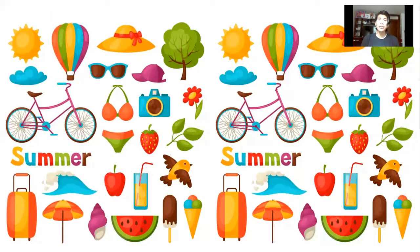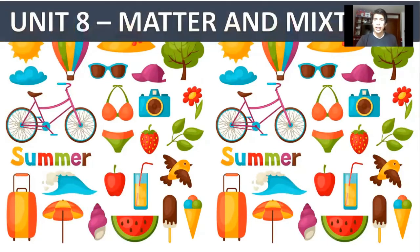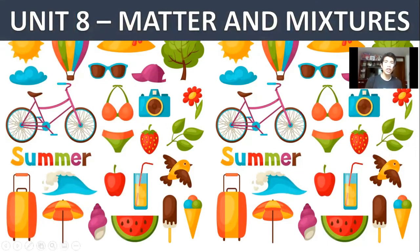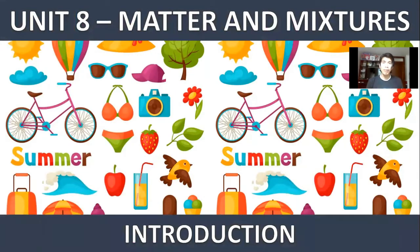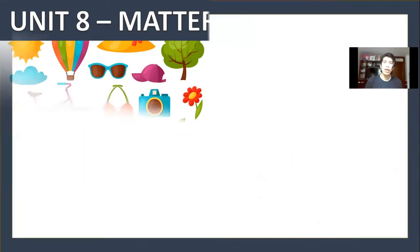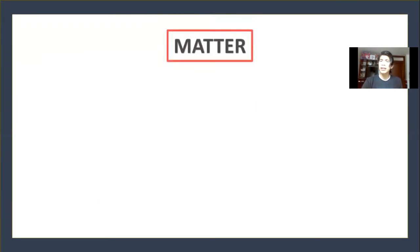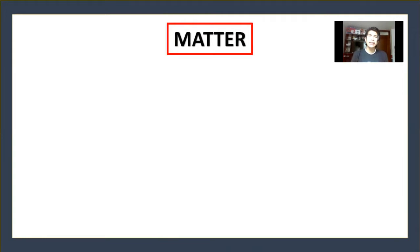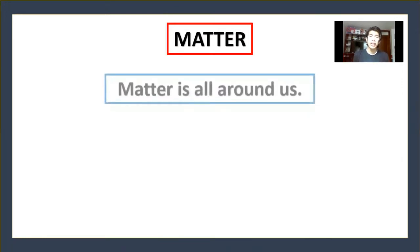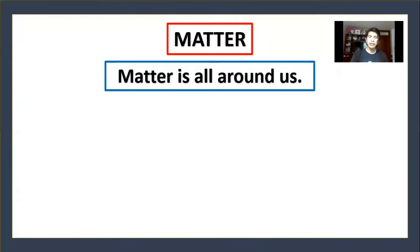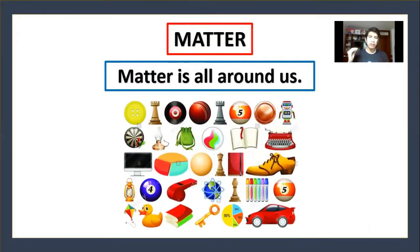Hello kids and welcome back to another science class. Today we are going to change topics and talk about Unit 8 — matter and mixture. We are going to do a little introduction to the topic. Before we start, we need to get this concept clear: matter is all around us. For example, objects — as you can see here in the picture, these objects are matter.